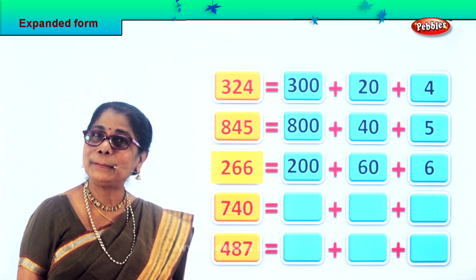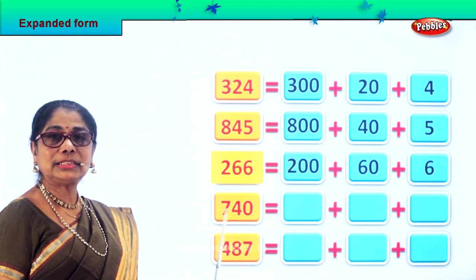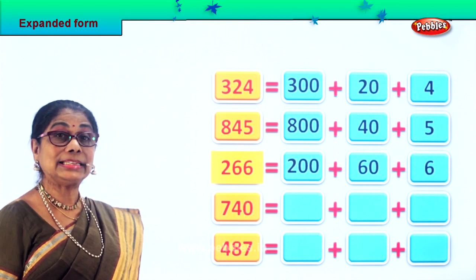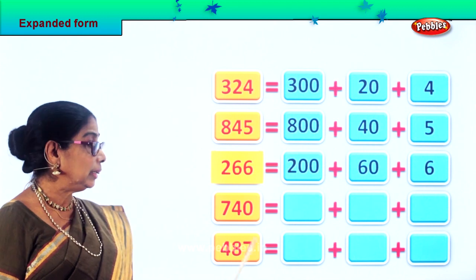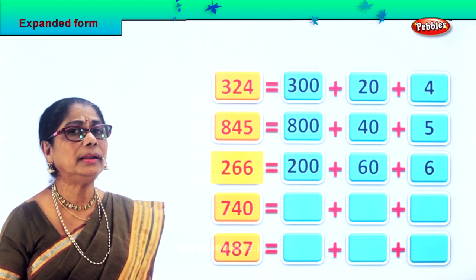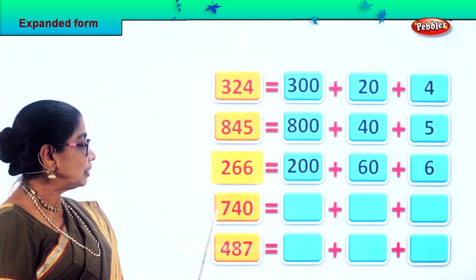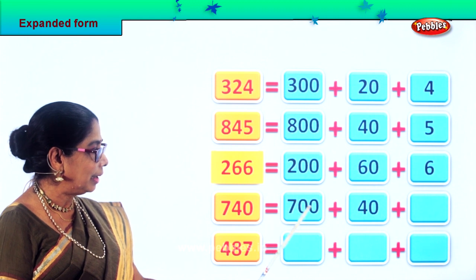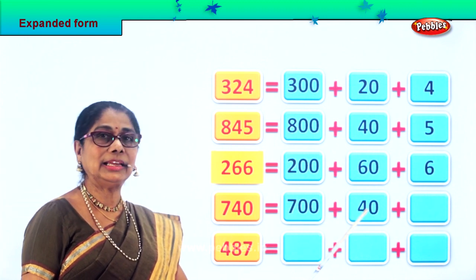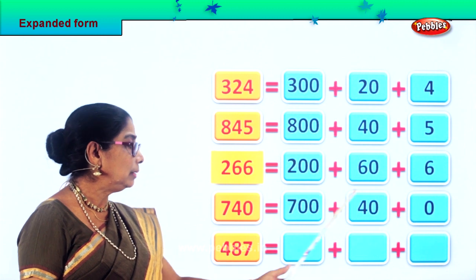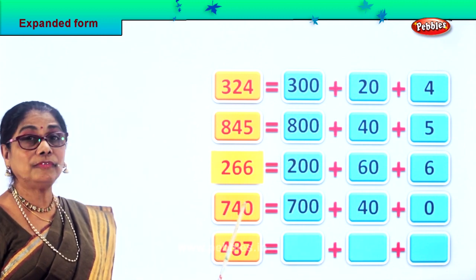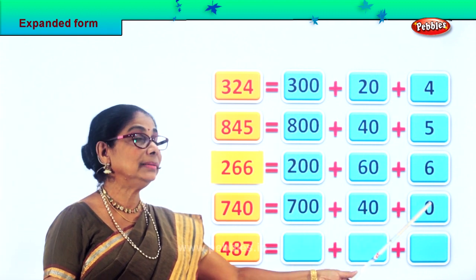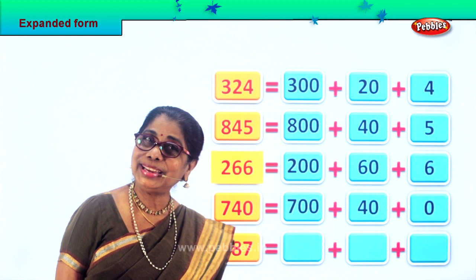Next we have 740 — zero in the ones place, four in the tens, seven in the hundreds. The number is seven hundred and forty. How many hundreds? Seven — so seven hundred. Plus four tens, that is forty. Plus zero ones. So 740 equals seven hundred plus forty plus zero.